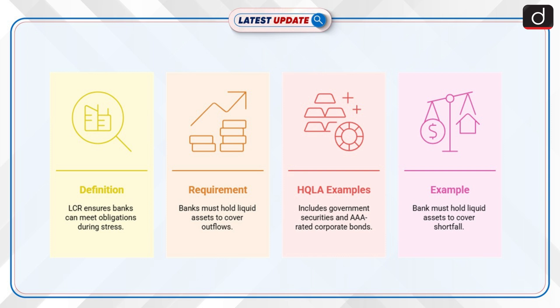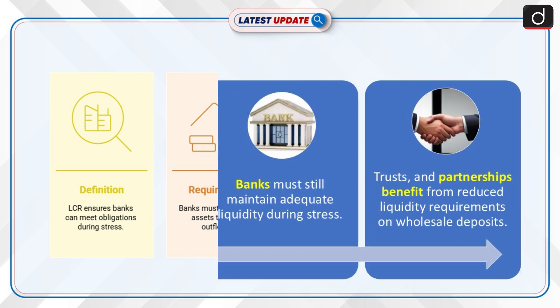HQLA includes assets like government securities and AAA-rated corporate bonds. For example, if a bank expects 120 rupees in outflows and 100 rupees in inflows over a month, it must hold 20 rupees in liquid assets to cover the shortfall.